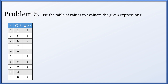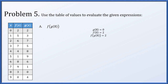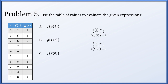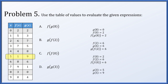In problem 5 we have a table of values. For f of g of 8: g of 8 is 0, then f of 0 is 2, so f of g of 8 equals 2. For g of f of 2: f of 2 is 6, then g of 6 is 6, so the result is 6. For f of f of 0: f of 0 is 2, then f of 2 is 6, giving 6. For g of g of 3: g of 3 is 5, then g of 5 is 9, giving 9.